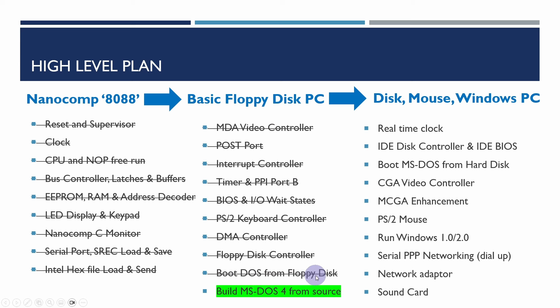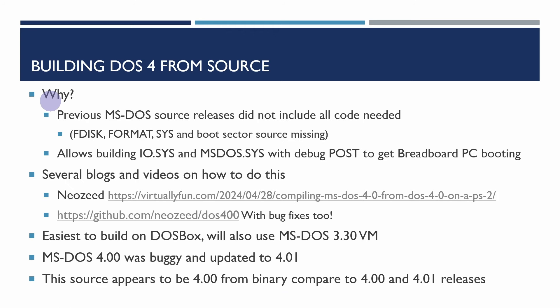However it wasn't really very functional and there are a few issues. I thought it might be easier to debug this by building MS-DOS 4 since Microsoft released the source code within the last two weeks, and it will allow me to instrument and debug the boot up process. So why are we choosing DOS 4? Well, previous DOS releases didn't really include all the code you needed — for example fdisk,